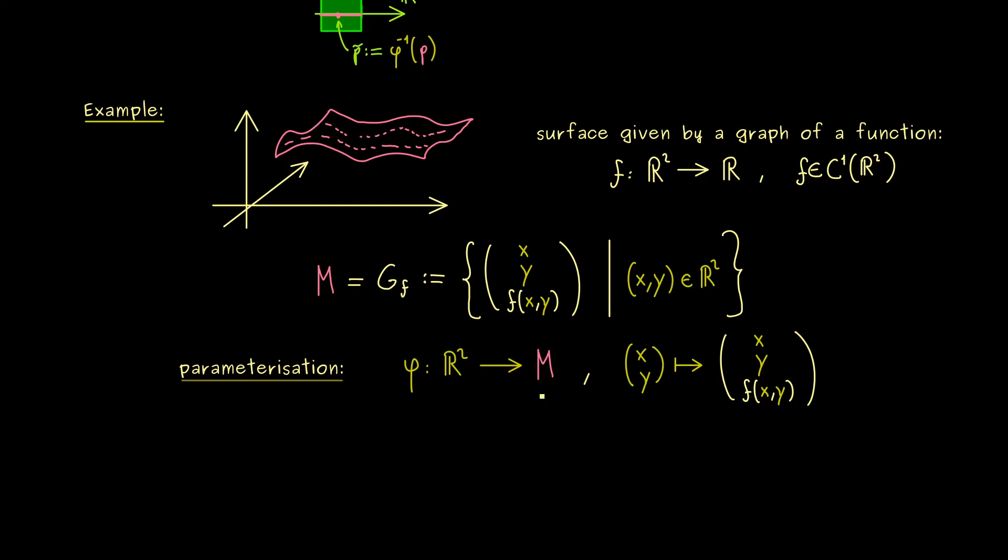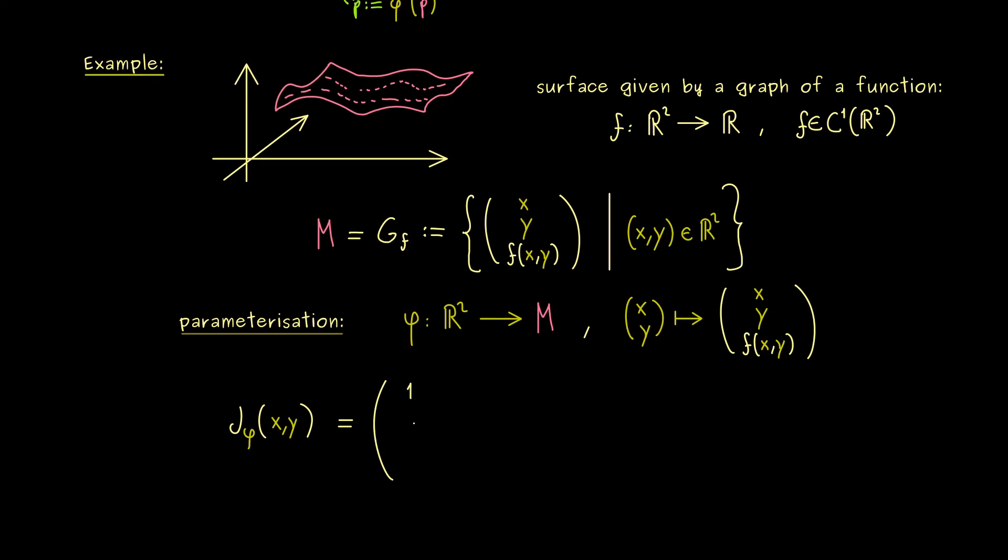And now we can look at the Jacobian matrix. And there, please note, the point p tilde now is just x, y. So not so complicated. And now we can calculate partial derivatives. The first column has the partial derivative with respect to x. So it's 1, 0 and partial derivative of f with respect to x. And please don't forget, this is evaluated at the point x, y. Okay, and then the next column would be the partial derivative with respect to y. So there we have 0, 1 and then the partial derivative of f with respect to y. Okay, so this is the Jacobian matrix. And now we know, these two columns here span the tangent space.